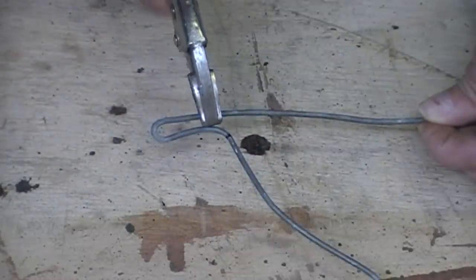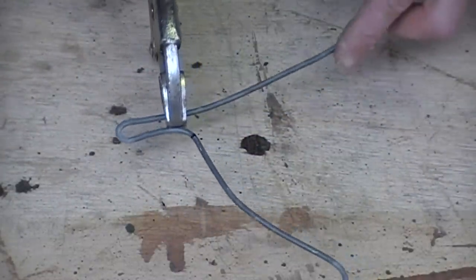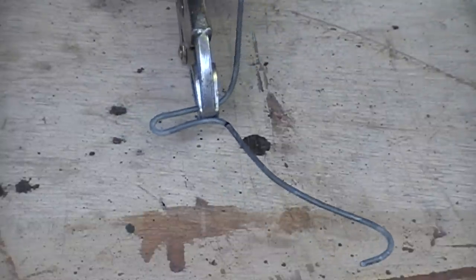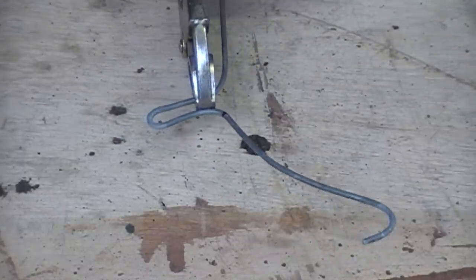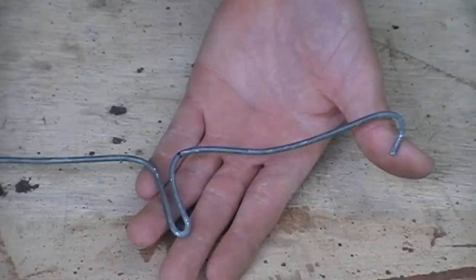Then again take the vise grips and clamp on to the wire parallel with the first 90 degree bend you made. And bend the wire back again at a 90 degree angle. So you've got a complete loop in it.